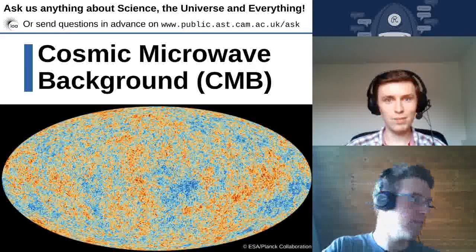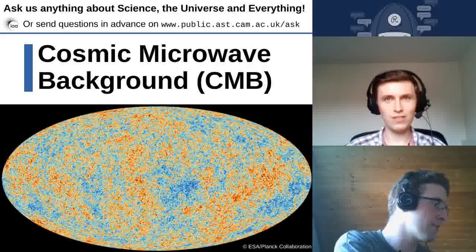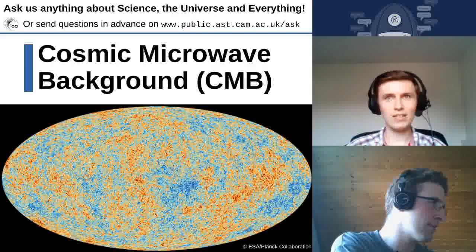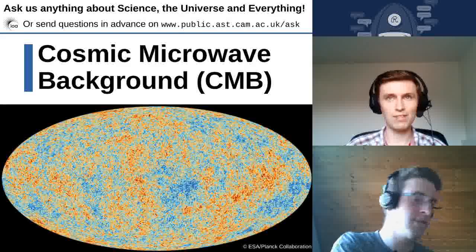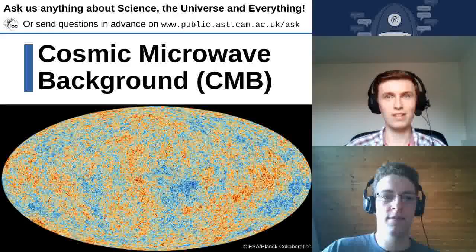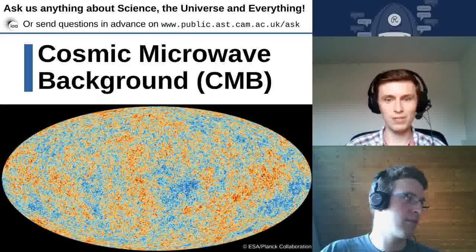We are both from the Institute of Astronomy at the University of Cambridge and we're PhD students. Tom is a fourth year PhD student in Astronomy working on stellar evolution, in particular evolution in binaries, triples and multiple systems in general.